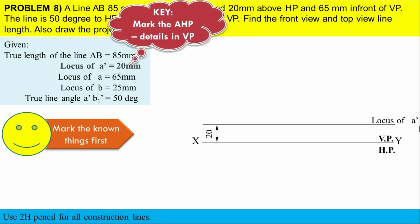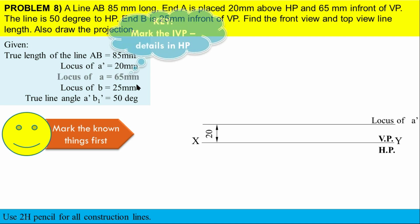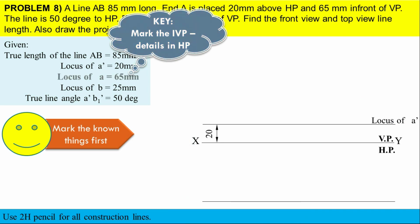That is locus of A', and the distance is 20 mm. Another locus is locus of A - that is 65 mm in front of XY. From the XY, measure 65 mm below and draw that particular locus. Note the key point: whatever is 'in front of' will be in HP, and whatever is 'above' will be in VP. That's it, because we are using first angle projection. Name the locus and mark the detail - that is 65 mm. Mark the dimensions in this orientation.